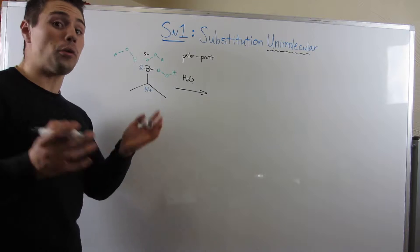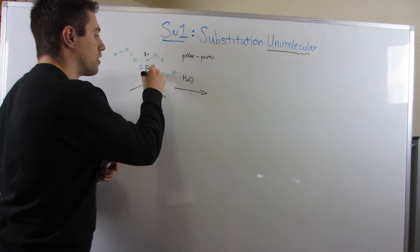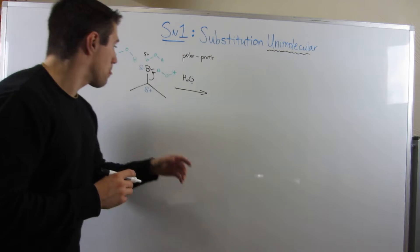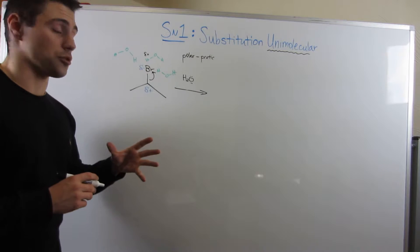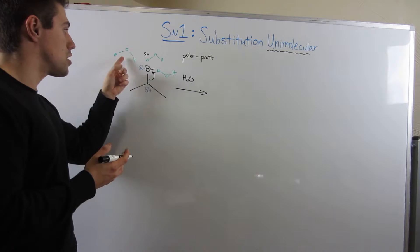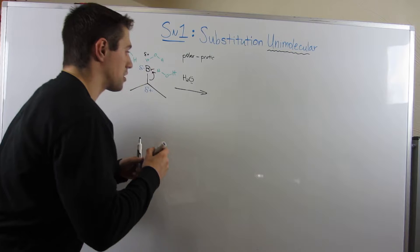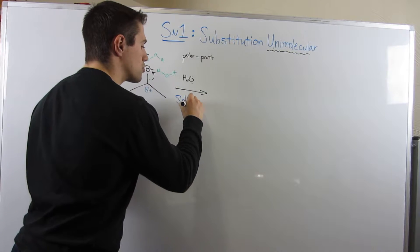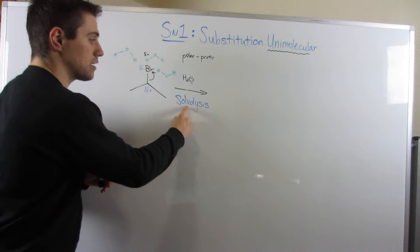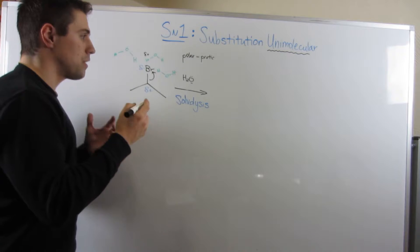Because remember, these hydrogens in the water molecules have a partial positive charge, so they're attracted to the partial negative of bromine. And here's what's going to happen. Bromine's going to eventually just be like, okay, I'm coming with you guys. And he's actually just going to leave. And this bond is just going to break.